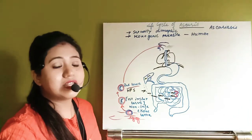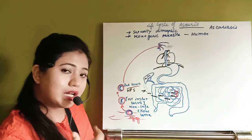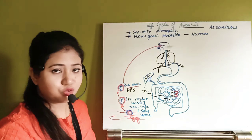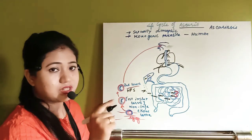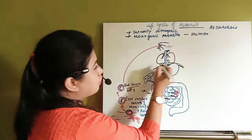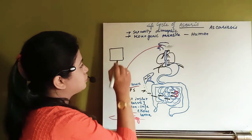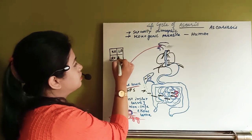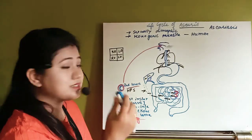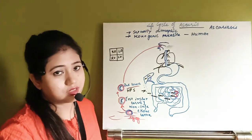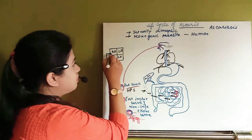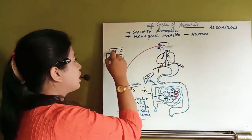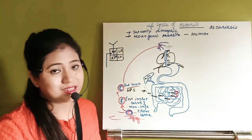From the hepatic portal system, the second instar larva reaches the liver, feeds on liver tissue, bores through it, and eventually reaches the heart. The heart has four chambers: right atrium, right ventricle, left atrium, and left ventricle. The right side carries deoxygenated blood and the left side carries oxygenated blood. Deoxygenated blood enters the right atrium and is pumped to the right ventricle, from which the pulmonary artery carries it to the lungs.